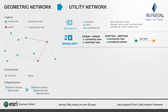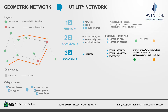Connectivity does not mean much if you are not able to use it for tracing. So let us look at the differences. When tracing, the weights within a geometric network provided the intelligence and cost of taking one path versus another. This capability is significantly expanded with network attributes in the utility network. Network attributes provide a scalable way to trace energy or resource flow, such as phase, pressure, or voltage, as well as recognize identity, such as circuit or pressure zone.